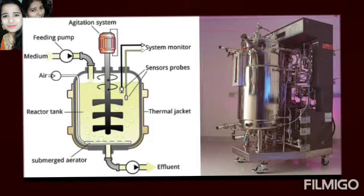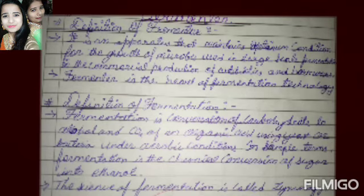Definition of fermentation: fermentation is a conversion of carbohydrates to alcohol and CO2 and organic acids using yeast or bacteria under aerobic conditions. In simple terms, fermentation is a chemical conversion of sugar into ethanol. The science of fermentation is called zymology.